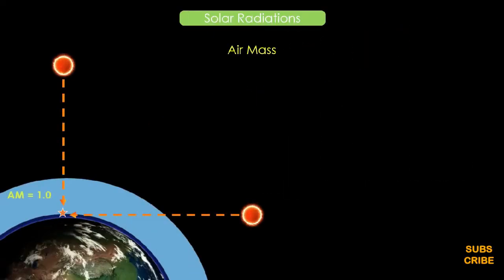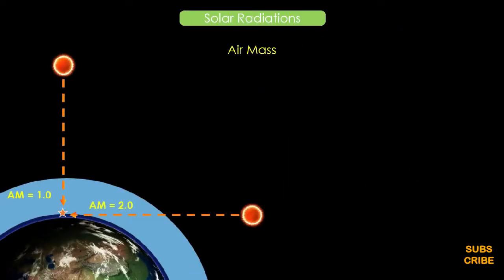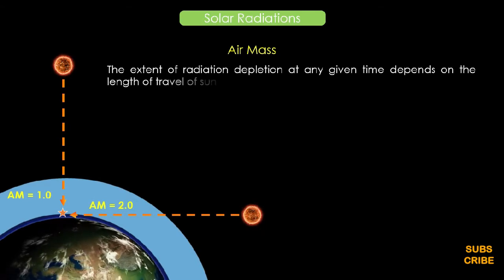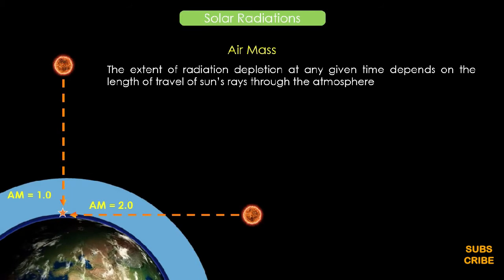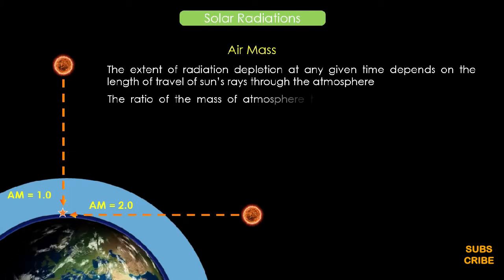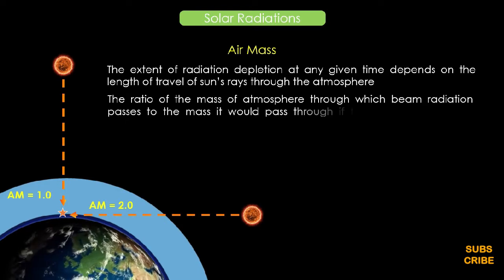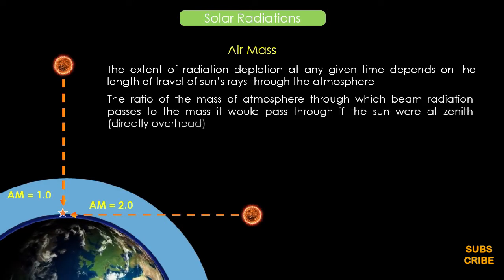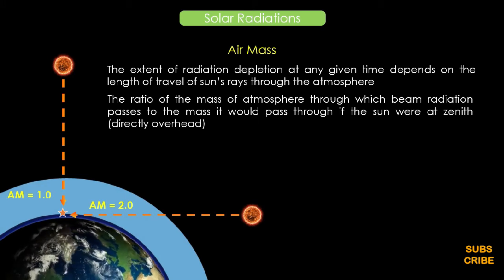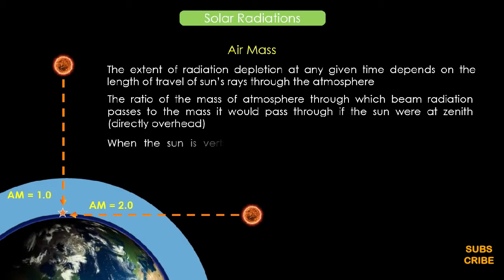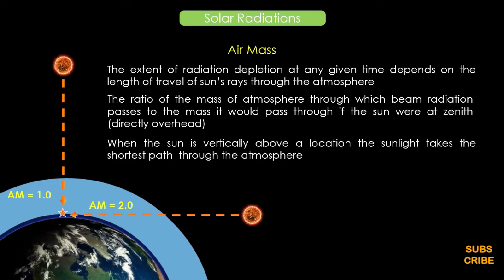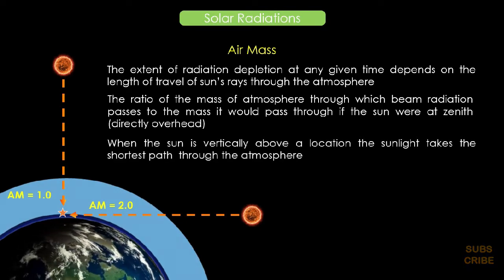Air mass: The extent of radiation depletion at any given time depends on the length of travel of the sun's rays through the atmosphere. The ratio of the mass of atmosphere through which the beam radiation passes to the mass it would pass through if the sun were at zenith, means directly overhead. When the sun is vertically above a location, the sunlight takes the shortest path through the atmosphere.